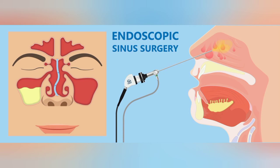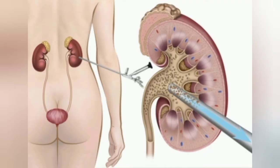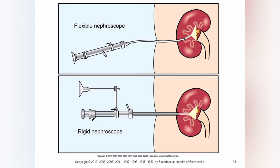After that, a nephroscope is used to examine the kidneys and to remove kidney stones, cysts, or other blockages. A nephroscope can use either a rigid or flexible type of scope depending on the need. The scope is inserted into the upper urinary tract through a very small cut in the skin.